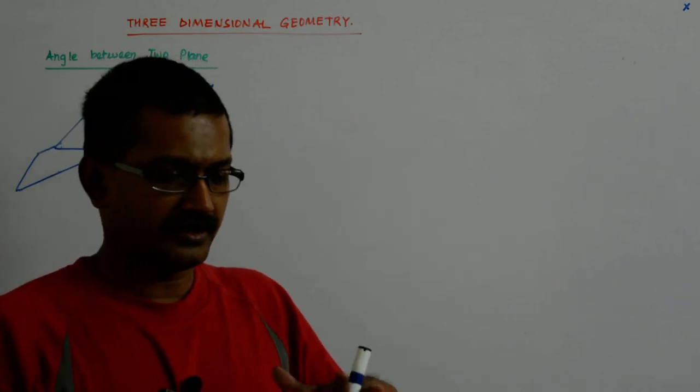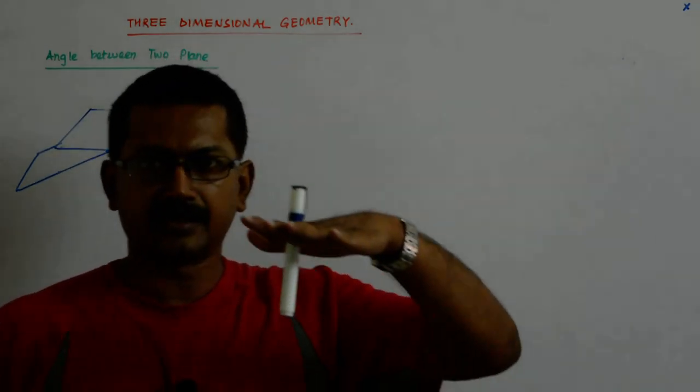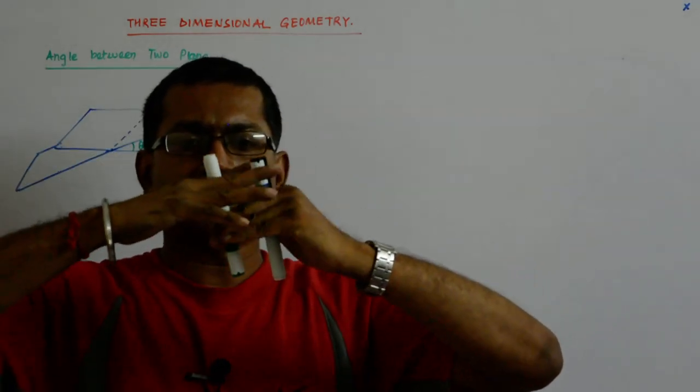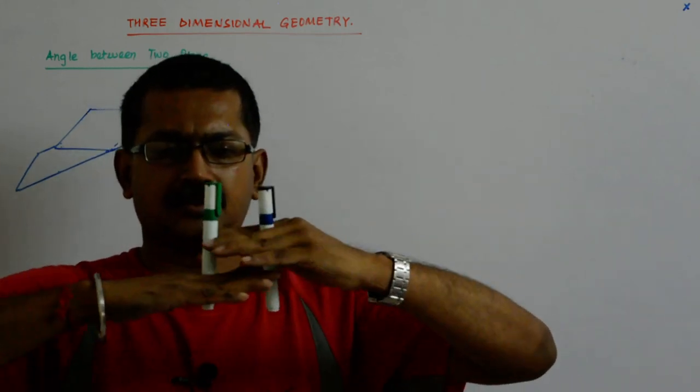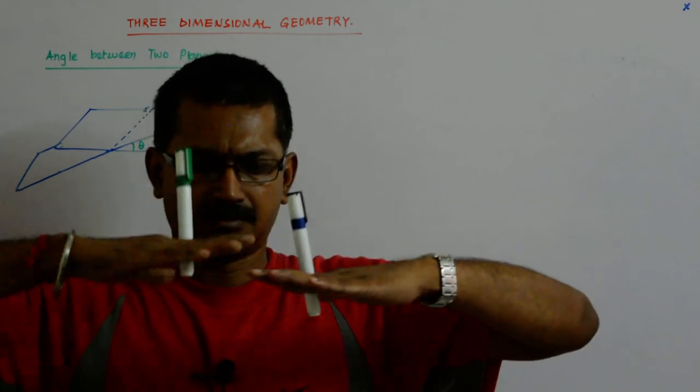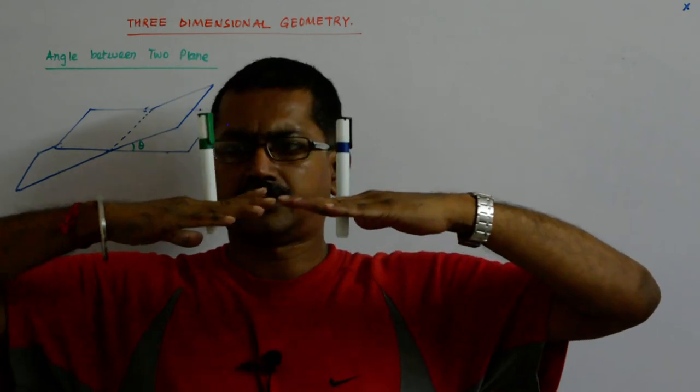See, if this is a plane and this is another plane, and the pens that I am holding like this, they are the normals to the planes. It looks like that. So these are two planes. Now these are normals.